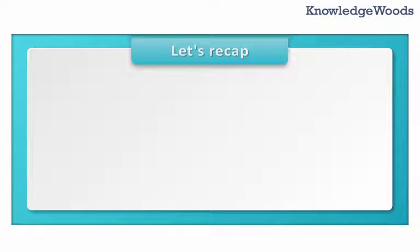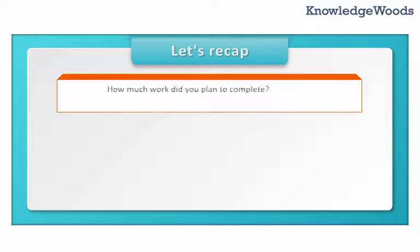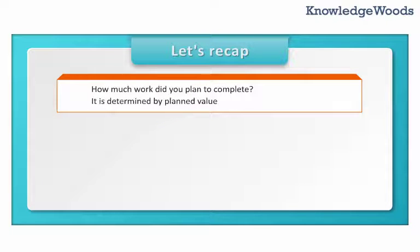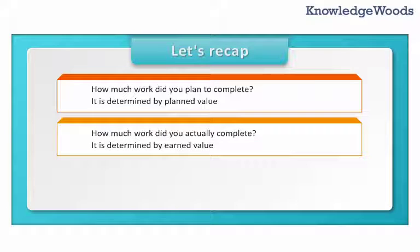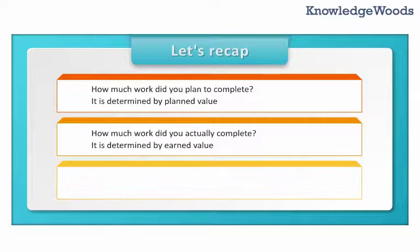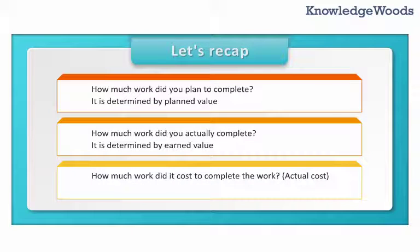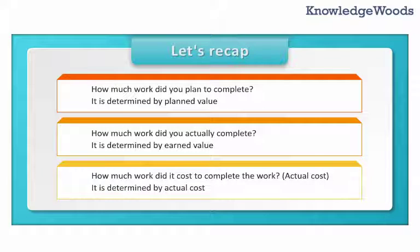Let's recap. How much work did you plan to complete? That is determined by Planned Value. How much work did you actually complete? That is determined by Earned Value. How much did it cost to complete the work? That is determined by Actual Cost.